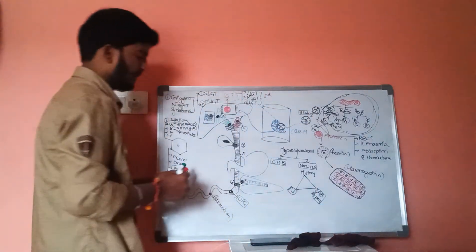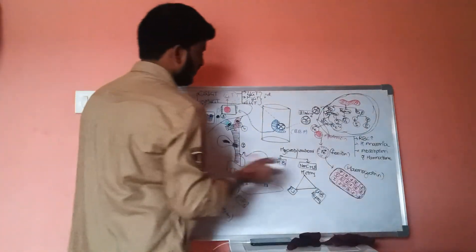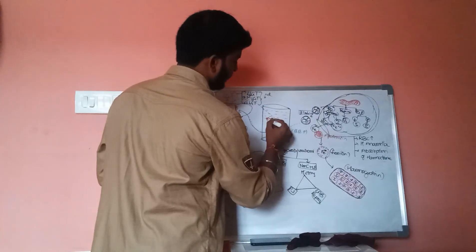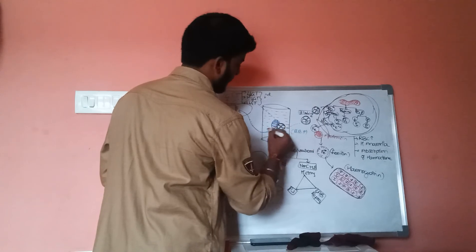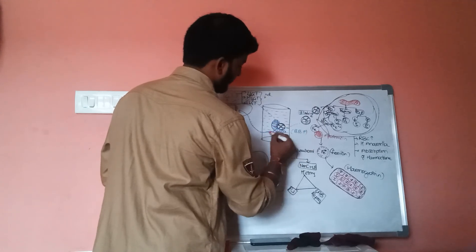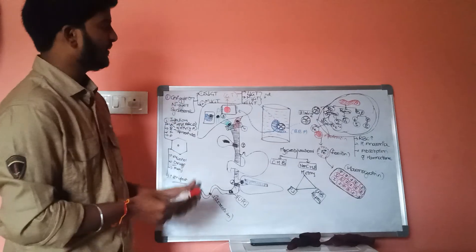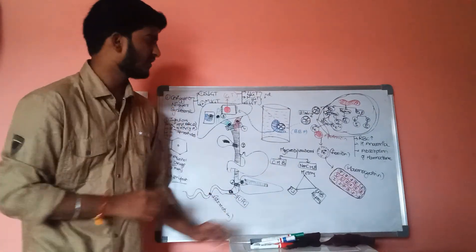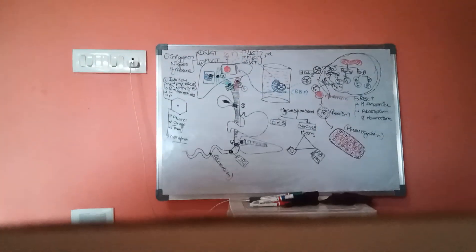This is a complete picture of jaundice, including the cardiovascular system through which the blood is flowing. This is the complete picture of jaundice.